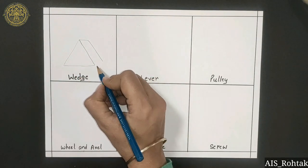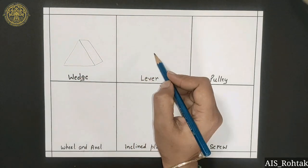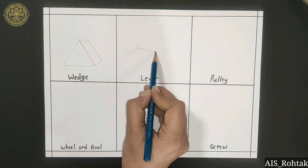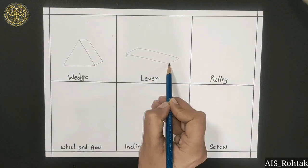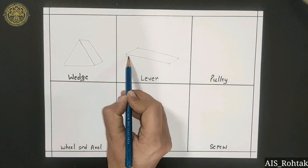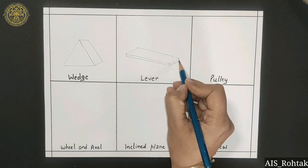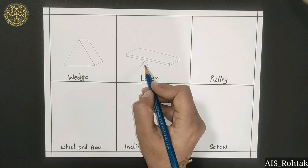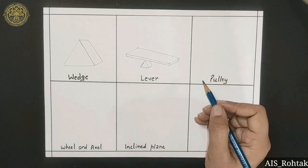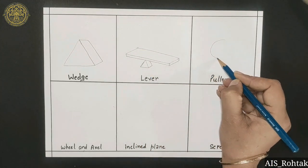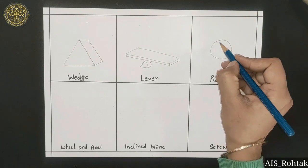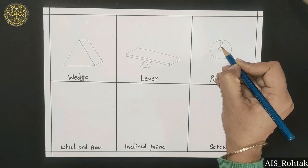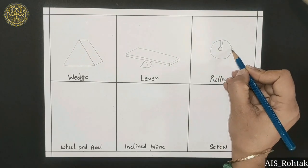one slanting line, then straight, and then again slanting line. For the lever we draw a rectangular shape and then draw its thickness like this. Then draw a triangle in the lower part of the lever. Then we draw a pulley. For this we draw a circle, then again small